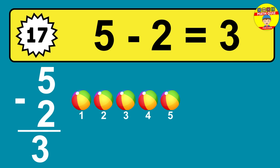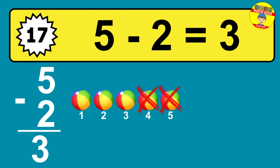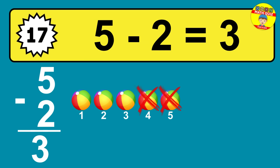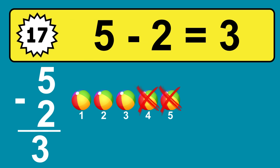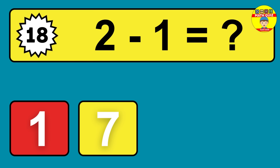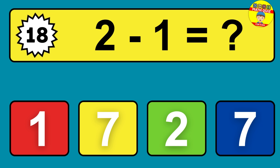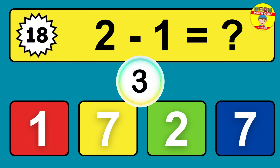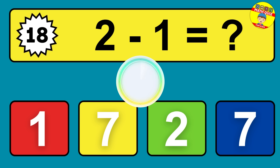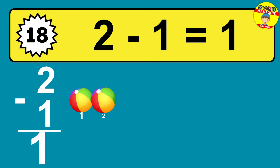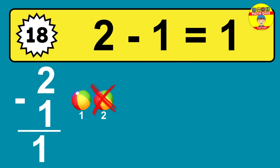So the answer is 5 minus 2 is 3. Let's count it: 1, 2, 3. So the answer is 2 minus 1 is 1. Let's count it: 1.